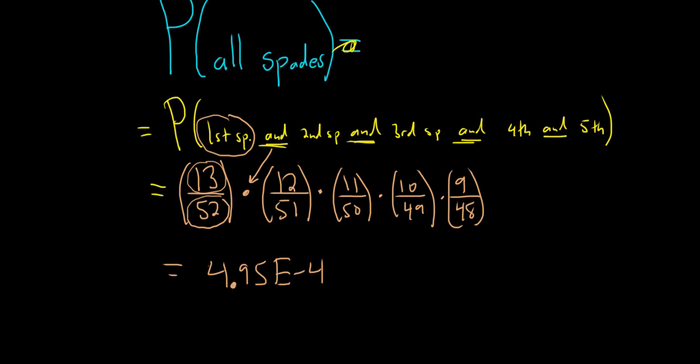What that means is you take the decimal and you move it four places to the left. So doing that, you'd get 1, 2, 3, 4, so you get three zeros. You get 0.000495.